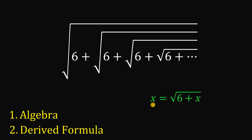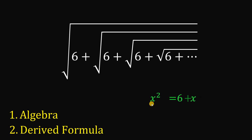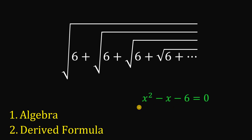Now, square both sides to eliminate the square root, giving us x squared equals 6 plus x. Equating this to 0, we get x squared minus x minus 6 equals 0.